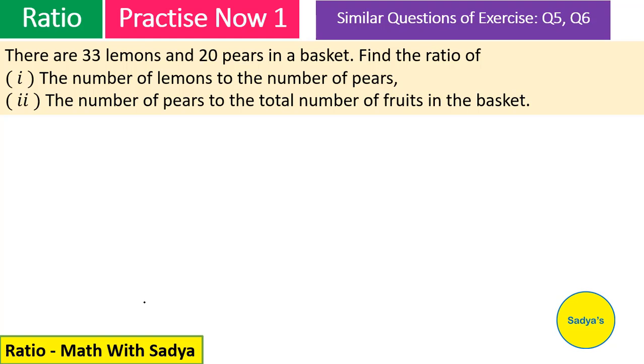So, question is: there are 33 lemons and 20 pears in a basket. Find the ratio of first part, the number of lemons to the number of pears. Now please keep this thing in mind that in ratio order is important.